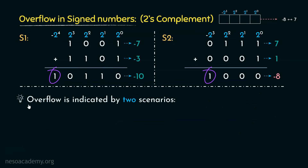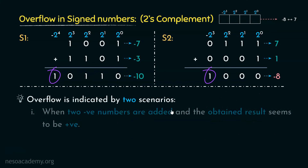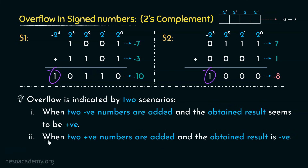In 2's complement representation, overflow is indicated by two scenarios. The first: when two negative numbers are added and the obtained result appears to be positive — it is supposed to be negative. The second: when two positive numbers are added and the obtained result appears negative. This is how we detect overflow in signed numbers, specifically in 2's complement form.